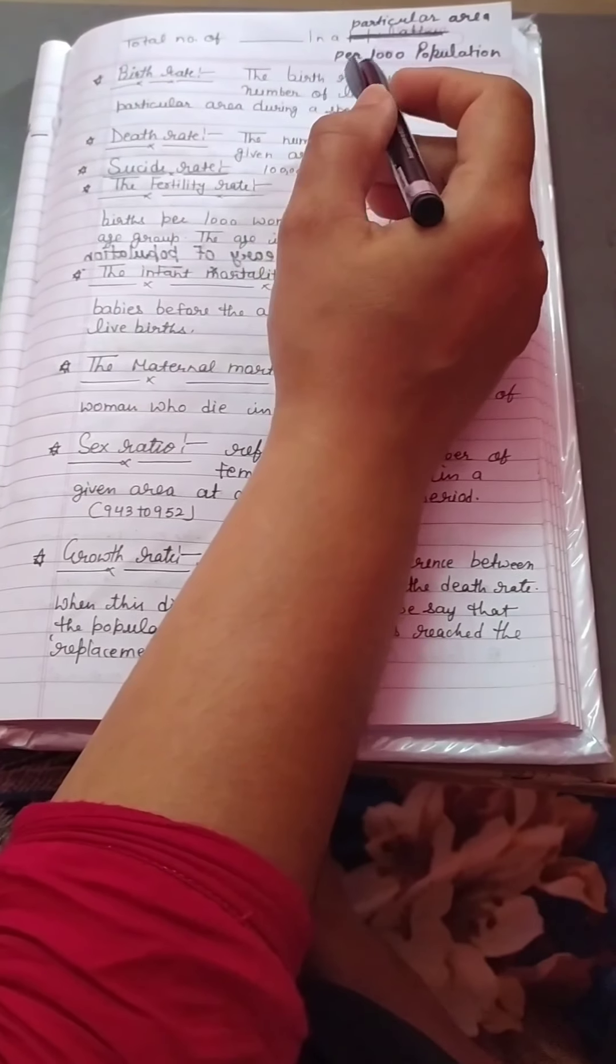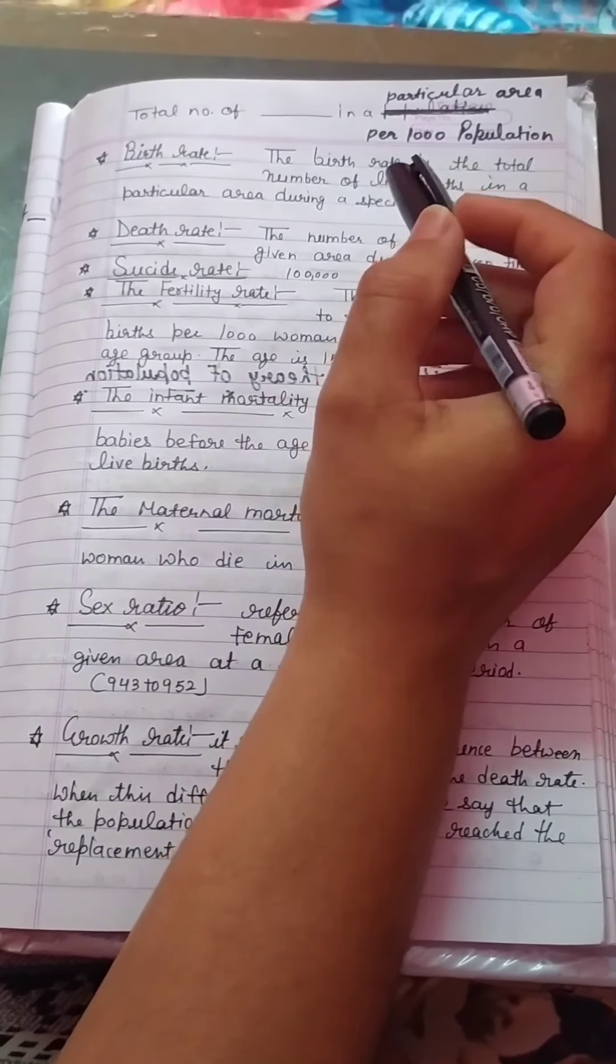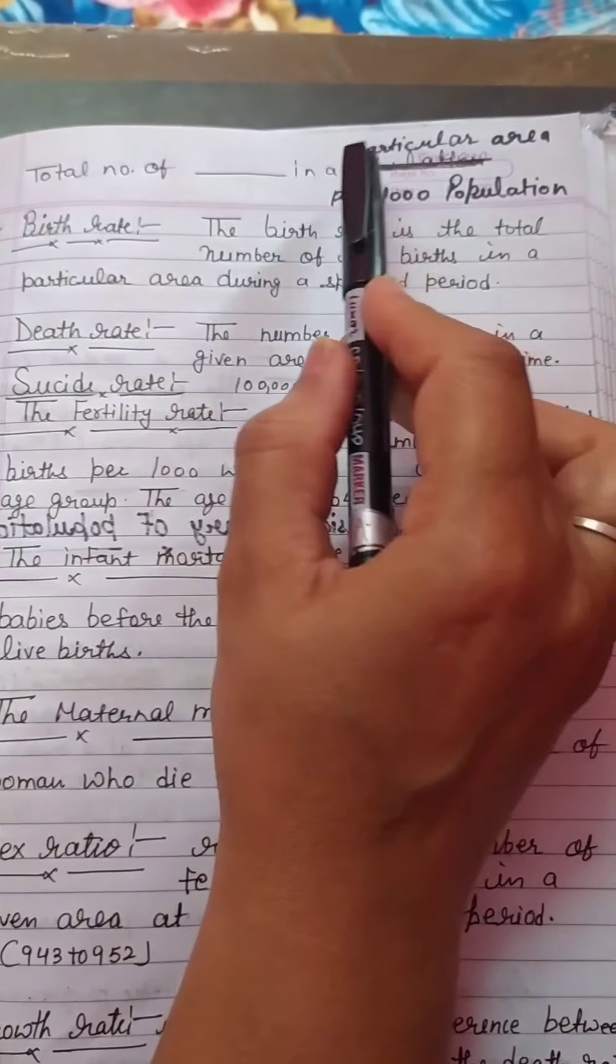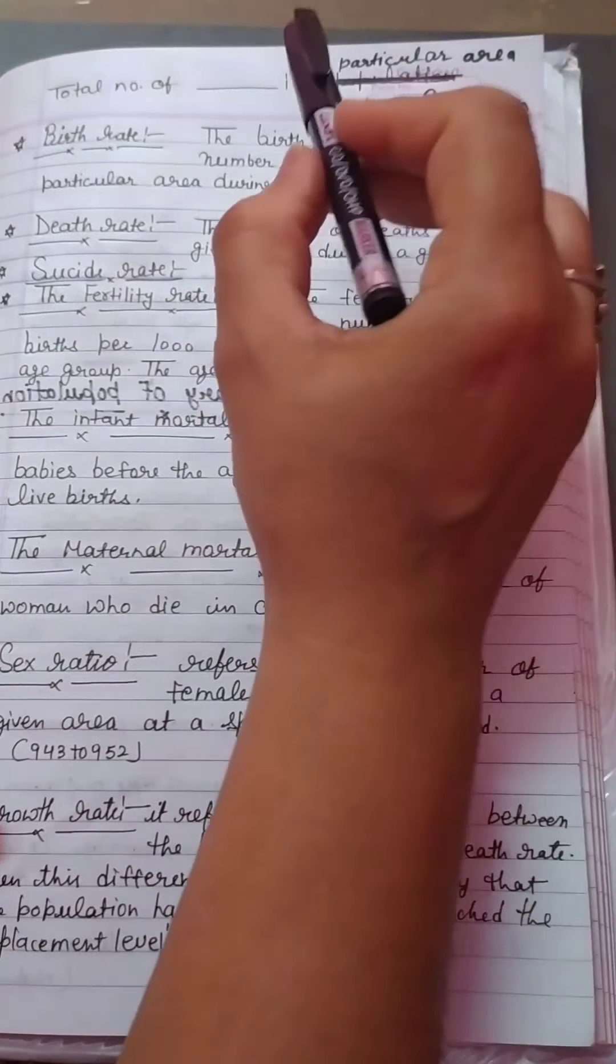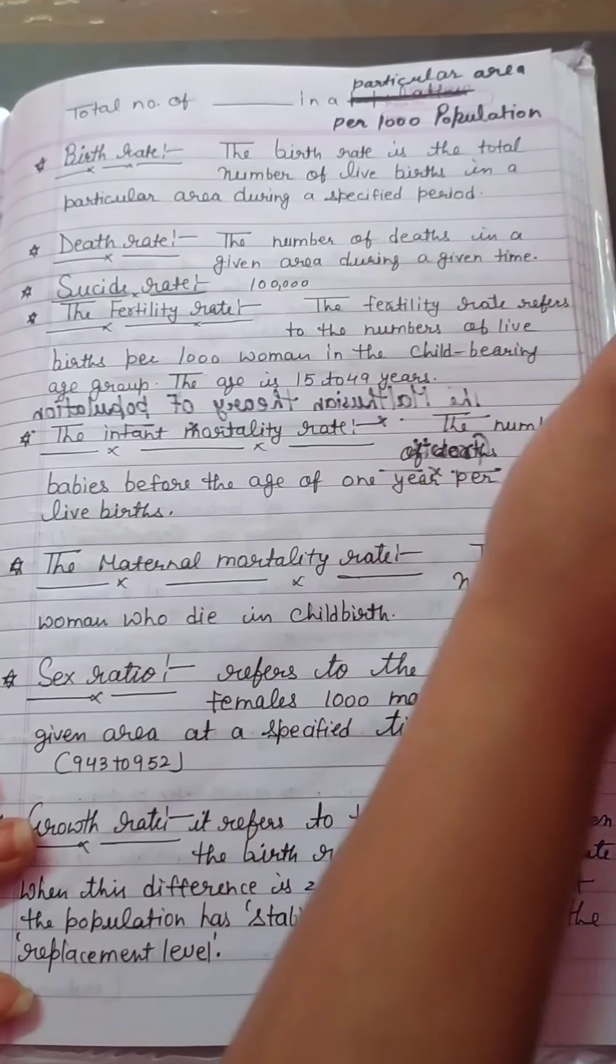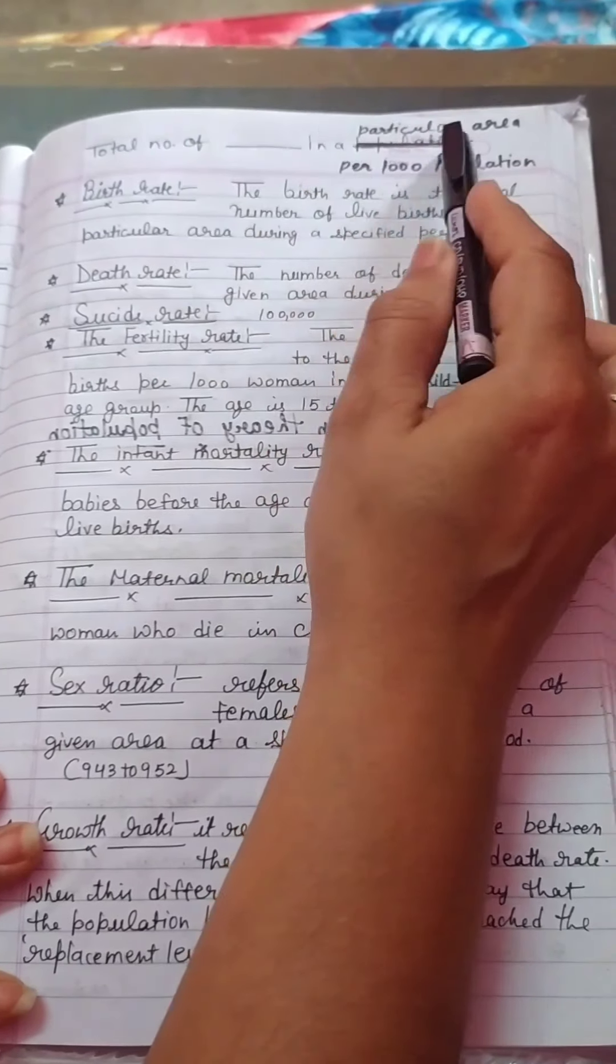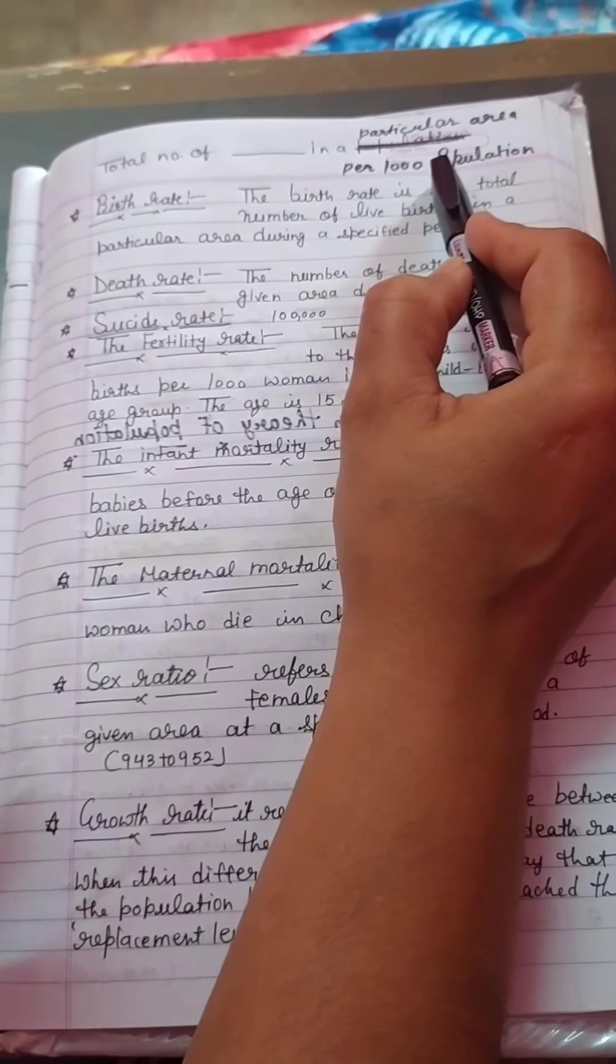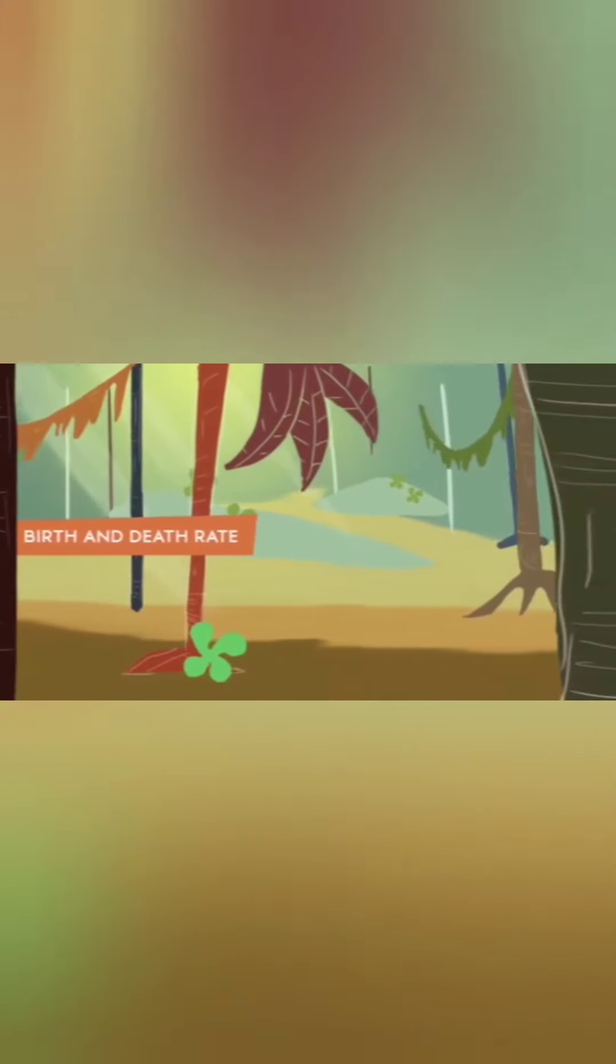Now in this chapter, we have to talk about birth rate, which is the total number of births in a particular area per thousand population. Birth rate is the total number of births in a particular area per thousand population. Now, I give you an example here, so watch it.